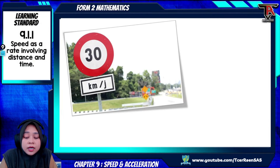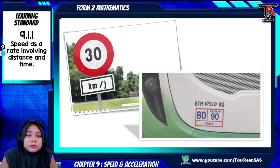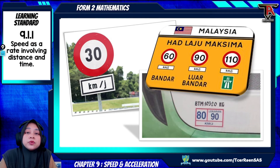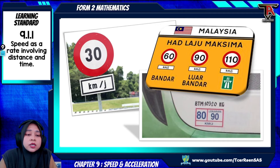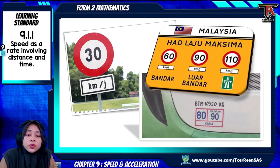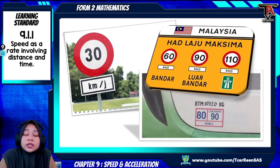Here I share with you some pictures showing about the speed limit that you can see around us. For example, this is the speed limit in Malaysia for different locations, whether in the city, village, or on the highway. Here I also show you the speed limit printed behind the bus, showing that the bus must not exceed the speed limit of 90 km per hour if the bus is on the highway.